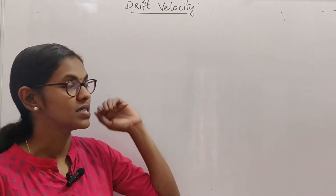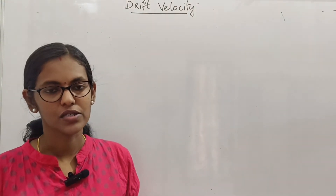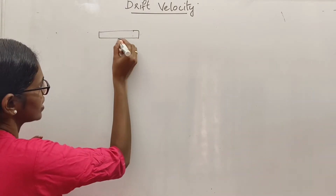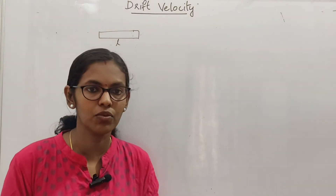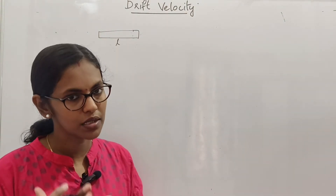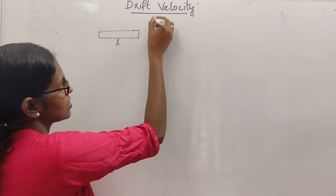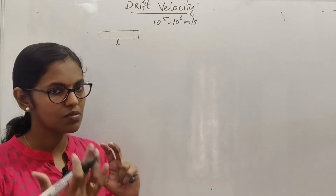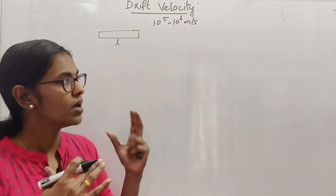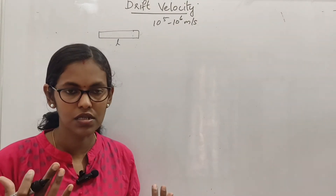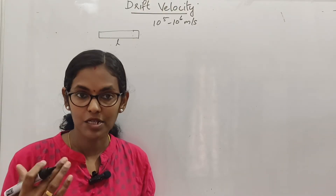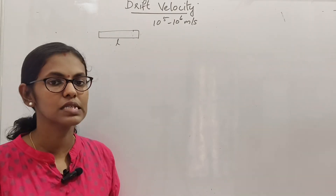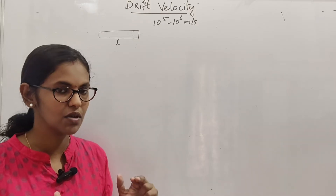How do we know about drift velocity? We have a conductor. At room temperature, electrons move with different velocities. If you consider the thermal speed, the average velocity of electrons at room temperature is zero.